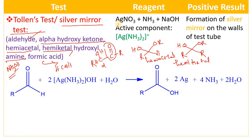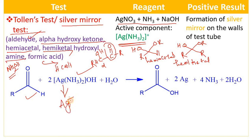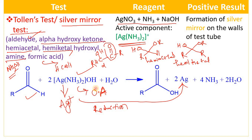What is the reagent? It is ammoniacal silver nitrate. The active component in the Tollen's reagent is [Ag(NH₃)₂]⁺. When you treat aldehyde with this reagent, the oxidation state of silver is Ag⁺ and it is converted to Ag⁰ — there is a reduction of Ag⁺ to Ag. This complex acts as an oxidizing agent and oxidizes aldehydes into carboxylic acids. On the walls of the test tube there is deposition of silver, forming a silver mirror.